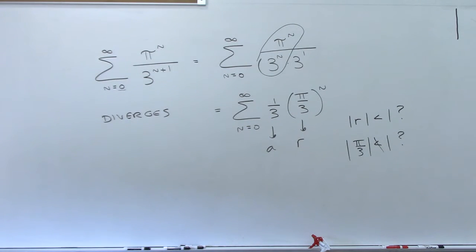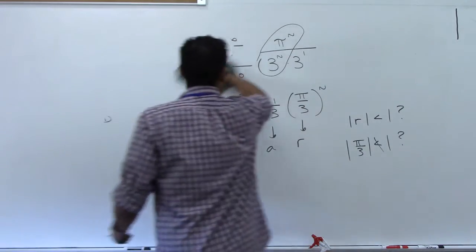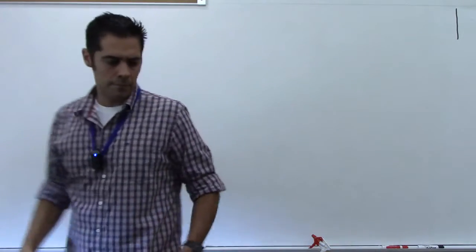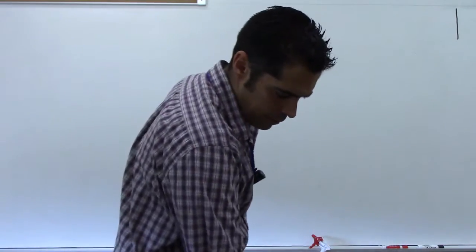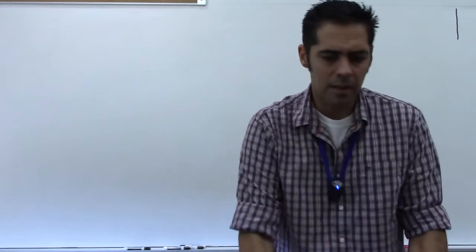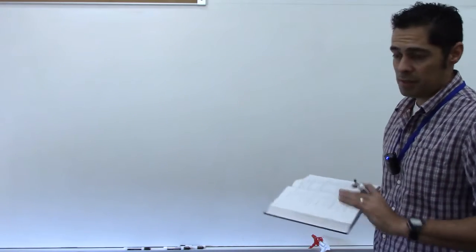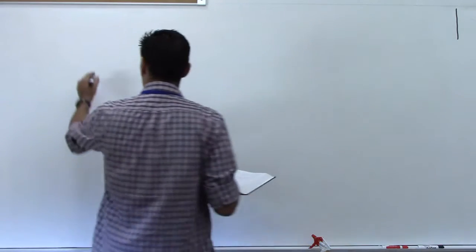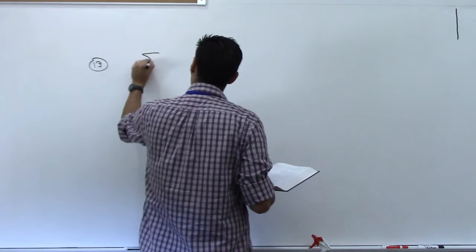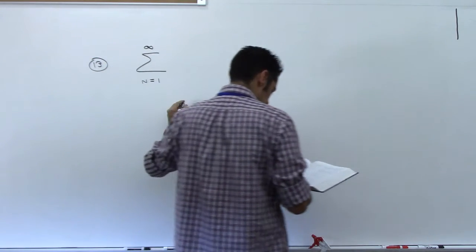Number 13 — they're not telling you it's a geometric series. This is the first time we have a series and we're not told what it is. We just have to figure out if it converges or diverges using anything we've learned in this section.